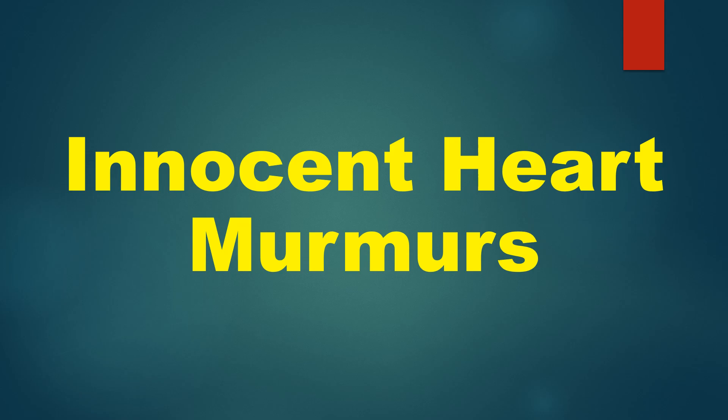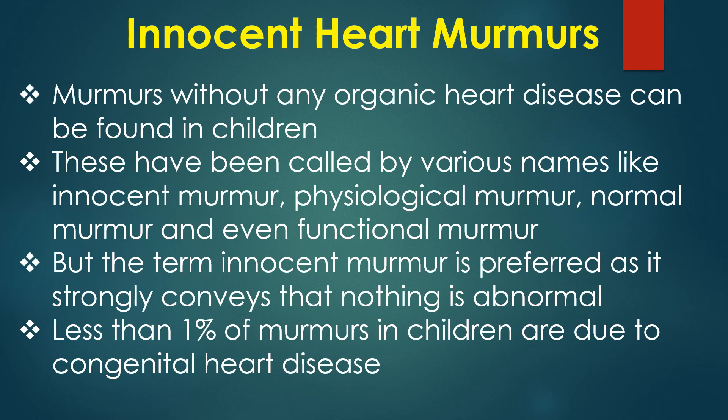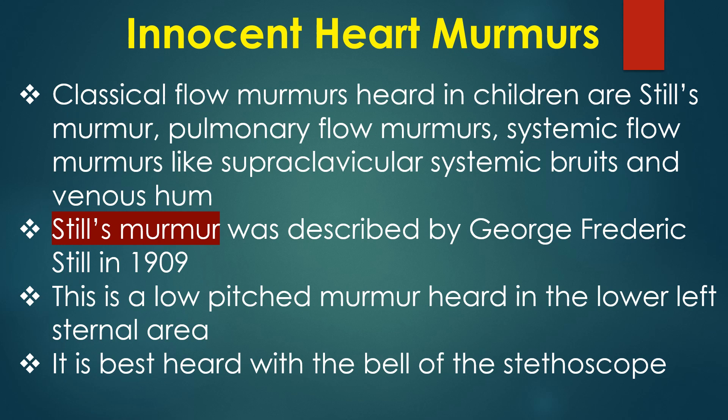Discussion on innocent heart murmurs. Murmurs without any organic heart disease can be found in children, called by various names — innocent murmur, physiological murmur, normal murmur and functional murmur. The term innocent murmur is preferred as it strongly conveys that nothing is abnormal. Less than 1% of murmurs in children are due to congenital heart disease. Classical flow murmurs heard in children are Still's murmur, pulmonary flow murmurs, systemic flow murmurs like supraclavicular systemic bruit, and venous hum.